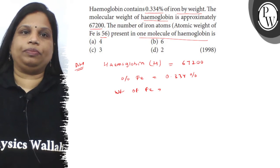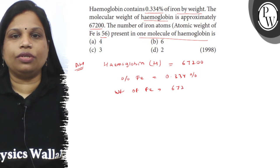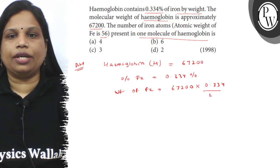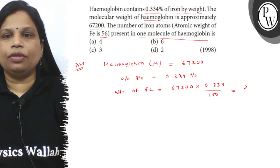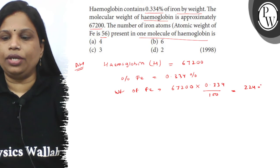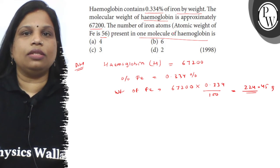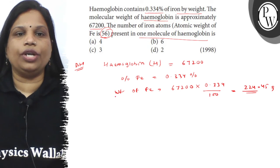Weight of iron in one mole of the hemoglobin is 67200 multiplied by 0.334 divided by 100, that is 0.334 percent, and this value will come 224.45 gram.